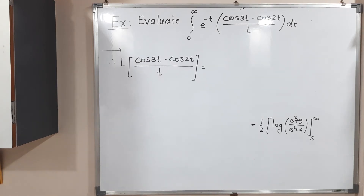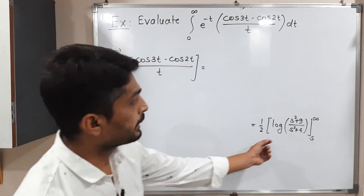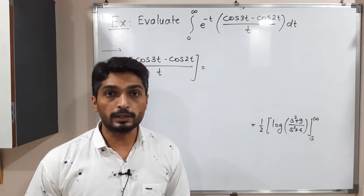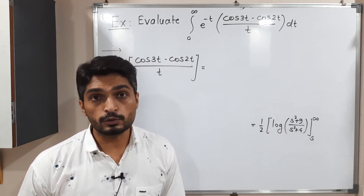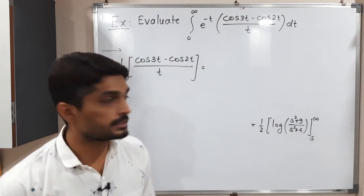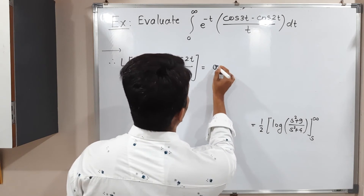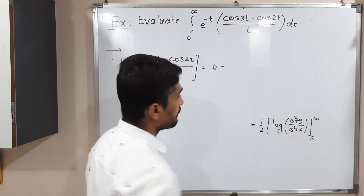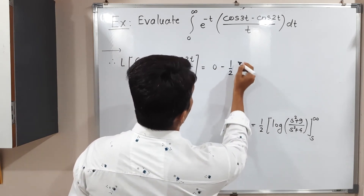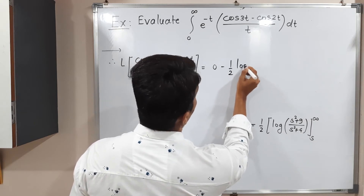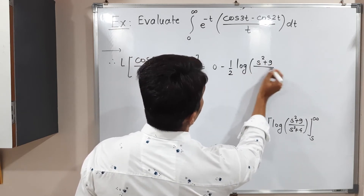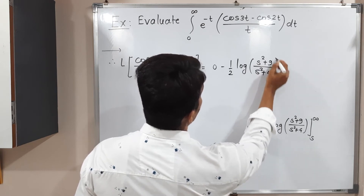Putting the upper limit infinity gives infinity over infinity; applying L'Hôpital's rule yields 1, and log 1 equals 0. So the upper limit contributes 0. Subtracting the lower limit gives minus (1/2) log[(s² + 9)/(s² + 4)].